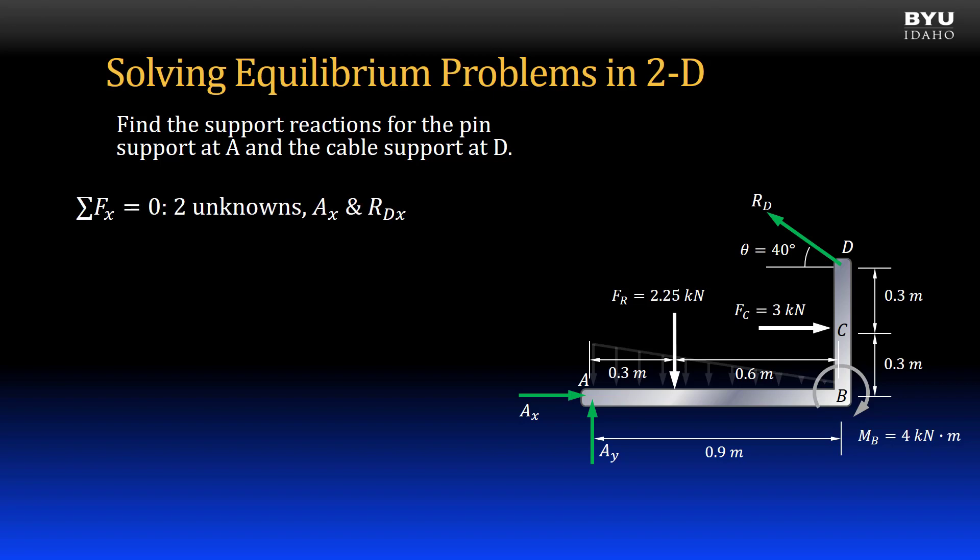I can sum forces in the x direction to zero. Looking at my free body diagram, I see that I have Ax and the horizontal component of RD as unknown variables in the equation.